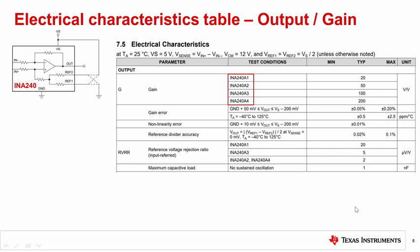For this example, once the output voltage drops below 50 mV or exceeds the supply minus 200 mV, then the gain error of the device can begin to deviate from the specification. For more information, consider watching our gain error video.